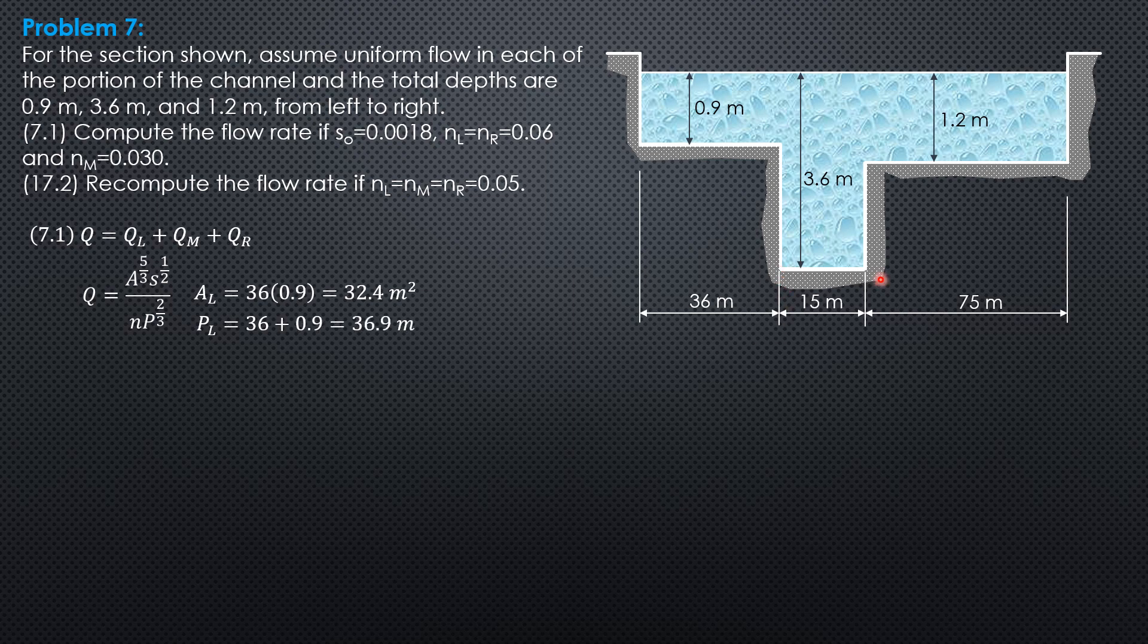For the middle channel, the area is 15 times 3.6, and it is 54 square meters. For the perimeter, it is 15 plus this length. This length is 3.6 minus 0.9, so 2.7, plus this length here is 3.6 minus 1.2, which is 2.4.